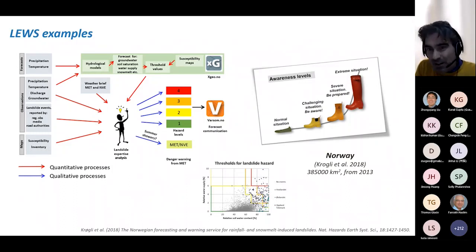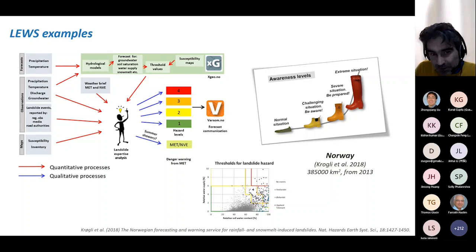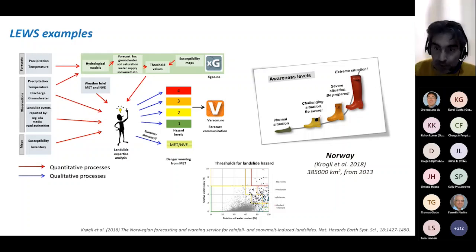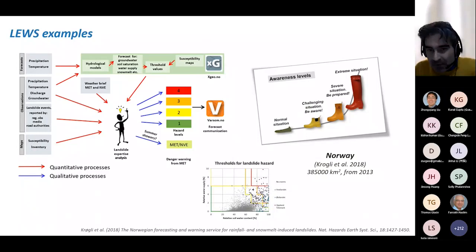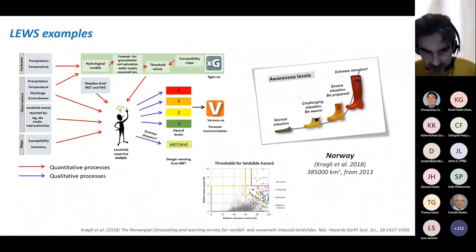We also have the national landslide early warning system in Norway, operational since 2013. Not only observations but also landslide susceptibility and inventory maps, weather forecasts, and hydrological models are used to define warning levels. Like in the previous system, the colours used are green, yellow, orange, and red — which is most typically what is done in many parts of the world.